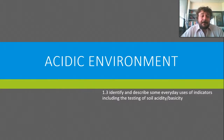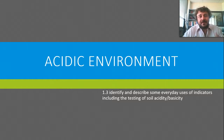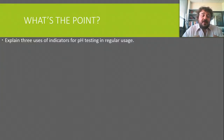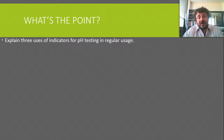Alright nerds, so basically today we're going to look at what are common everyday uses of indicators — where would we use these frequently in our lives, or in society. You want to be able to explain three common uses of indicators for pH testing, especially soil testing. If you only get one, that's the one to get, but you really do need three.